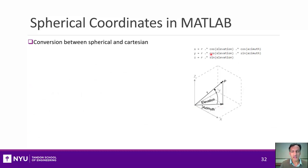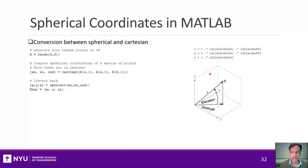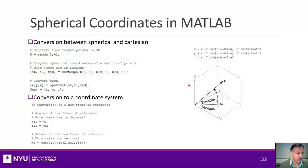In MATLAB, it's super easy to convert between spherical and Cartesian coordinates. For example, if I had a matrix of four random points each with three Cartesian values, you can convert to spherical coordinates with just the cart2sph function and convert back. You can also rotate and convert to a new frame of reference using cart2sphvec. In your lab, I'll make sure you know how to do these manipulations.